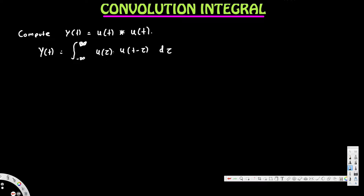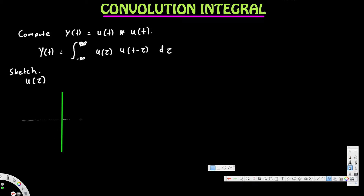To solve this problem we need to know how u looks graphically. Let's draw the graph of u(τ). The unit step function turns on at 0, so until 0 we have 0. It goes along 0 until τ equals 0, and after that it turns on and extends with a height of 1. This is u(τ).